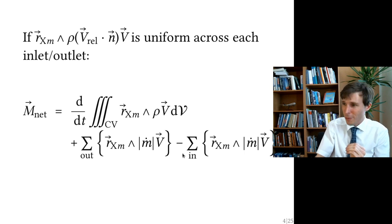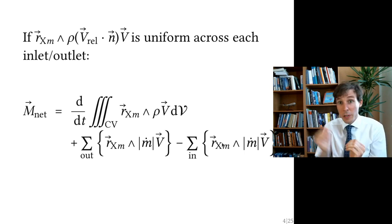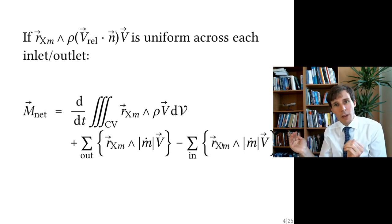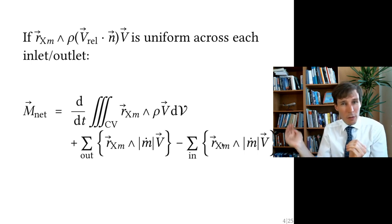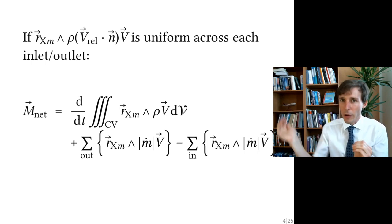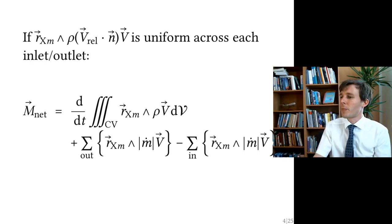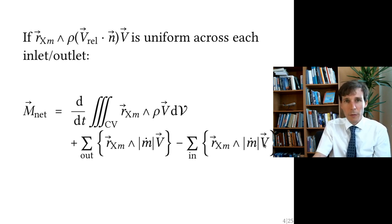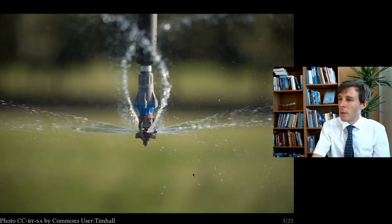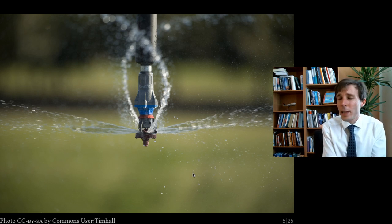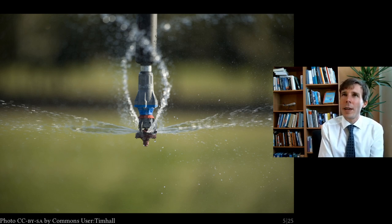And minus for the incoming flow: the cross product of the position of the inlet with the linear momentum through the inlet. This is a vector equation — the cross product of two vectors is a vector.